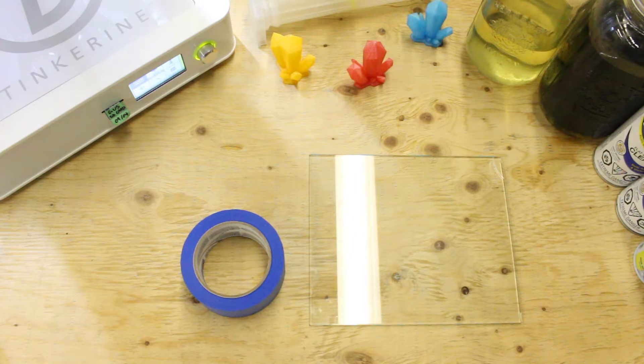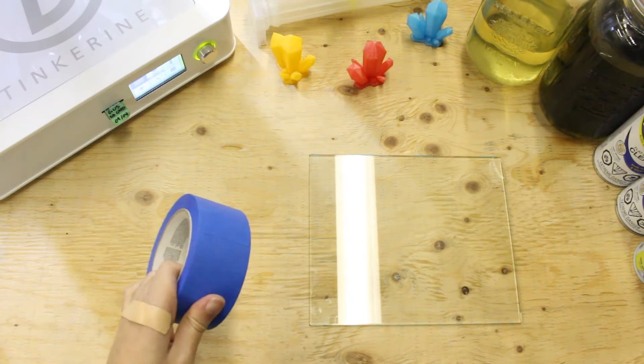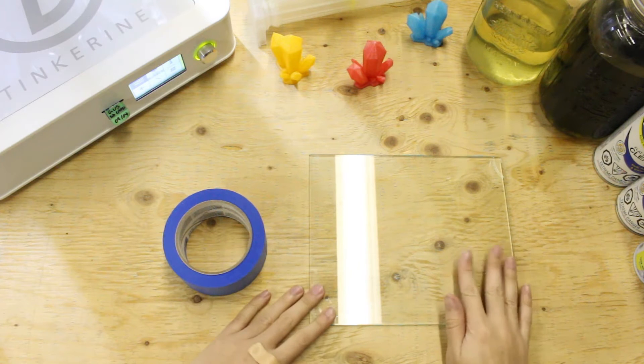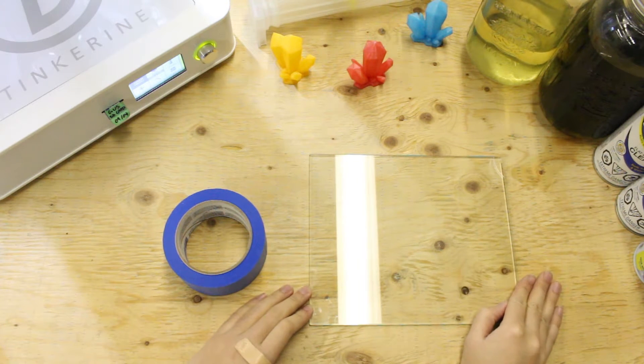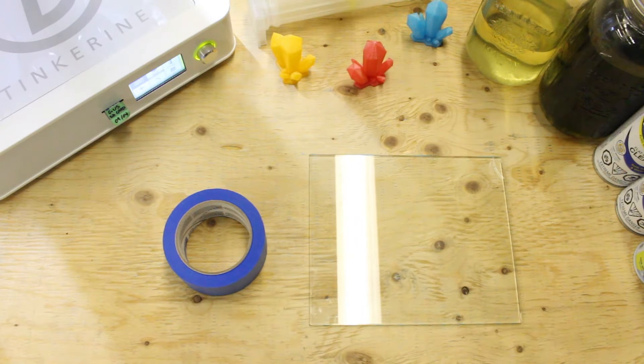Welcome to another episode of Tinkering Experiments. Today we are going to try out inverted blue tape as a bed adhesive. We heard that inverting the blue painter's tape on the bed actually provides a nice bed adhesion for the PLA to stick on and we are here to validate it.